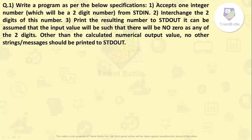We need to write a program and we are given three conditions. The first is: accepts one integer number. This is regarding the input which we will be providing to the program. It will be a two-digit number from stdin.